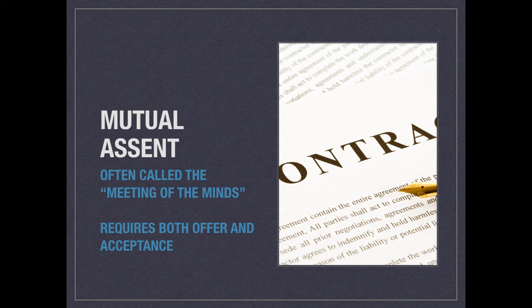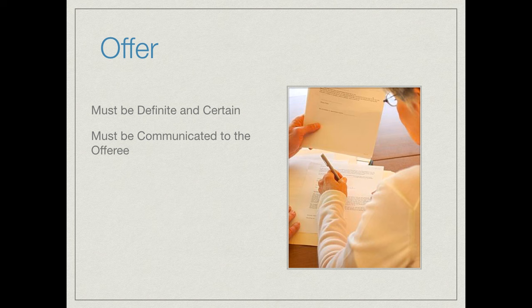If you're going to have mutual consent, you have to have an offer. For example: I offer to you, Mary Jones, I would like my grass cut, and if you cut my grass, I'm willing to pay you $100. That's my basic offer. But because this is the law, it can't be that simple. My offer must be definite and certain, and it must be communicated to the offeree. We can presume there was communication because I was talking to Mary at the time I made that statement. But was my offer definite and certain enough?